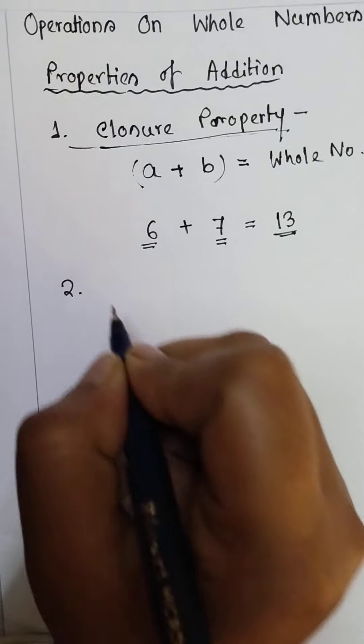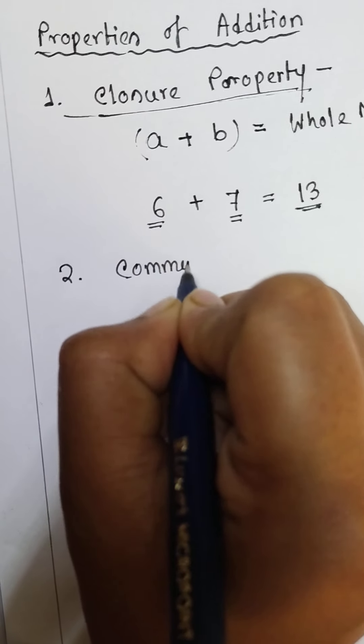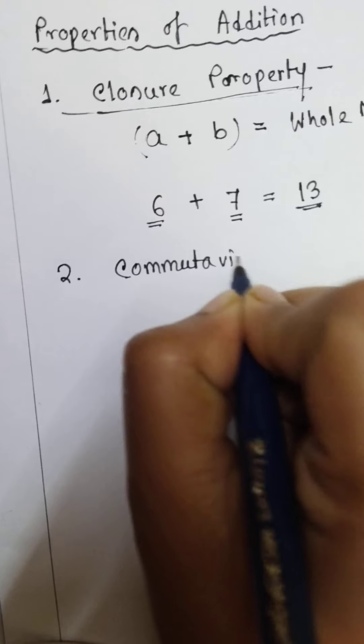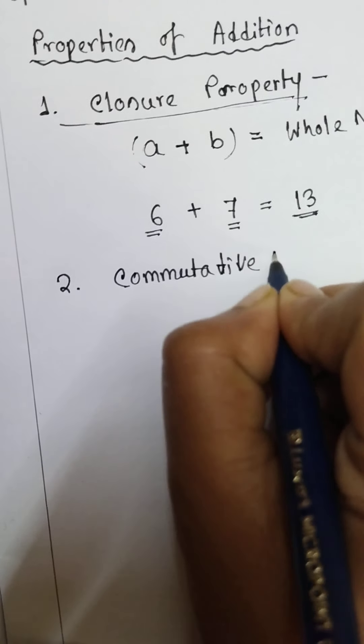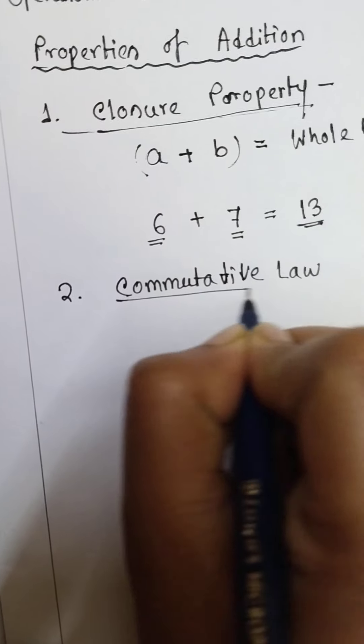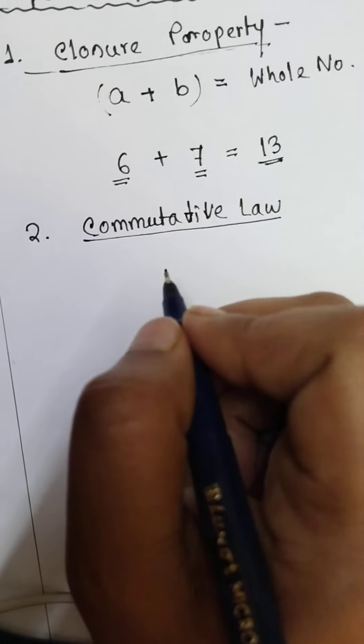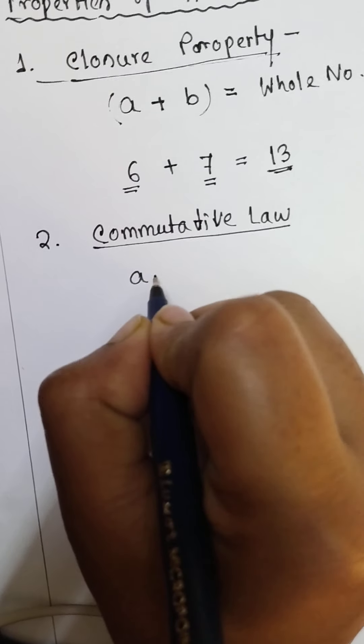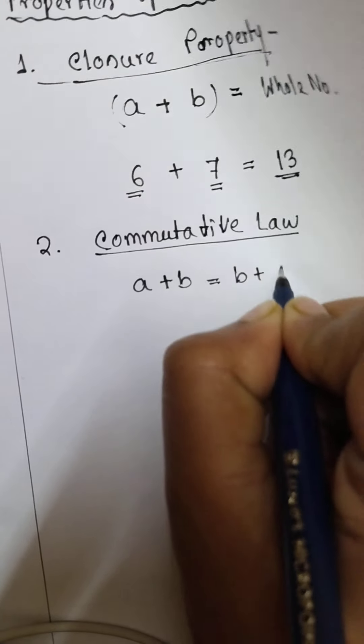The next is commutative law. What is the commutative law? If a and b are any two whole numbers, then a plus b will equal b plus a.